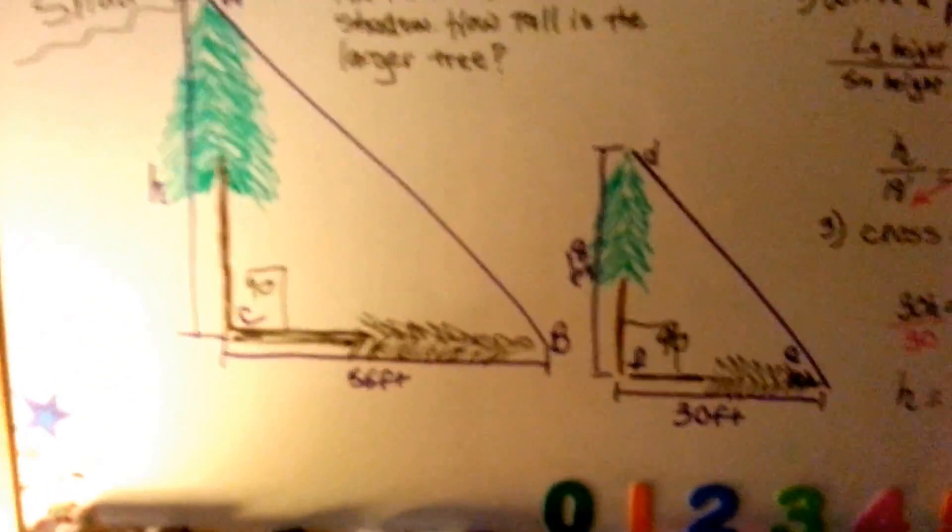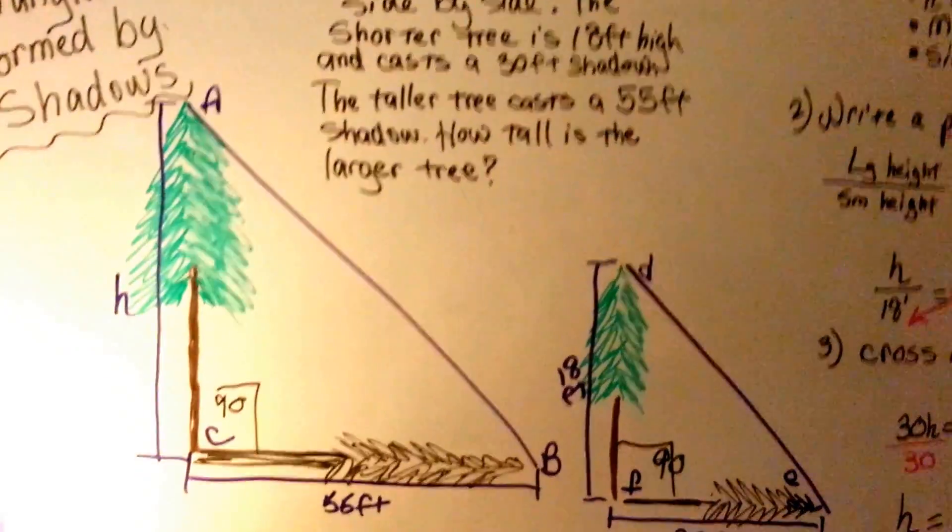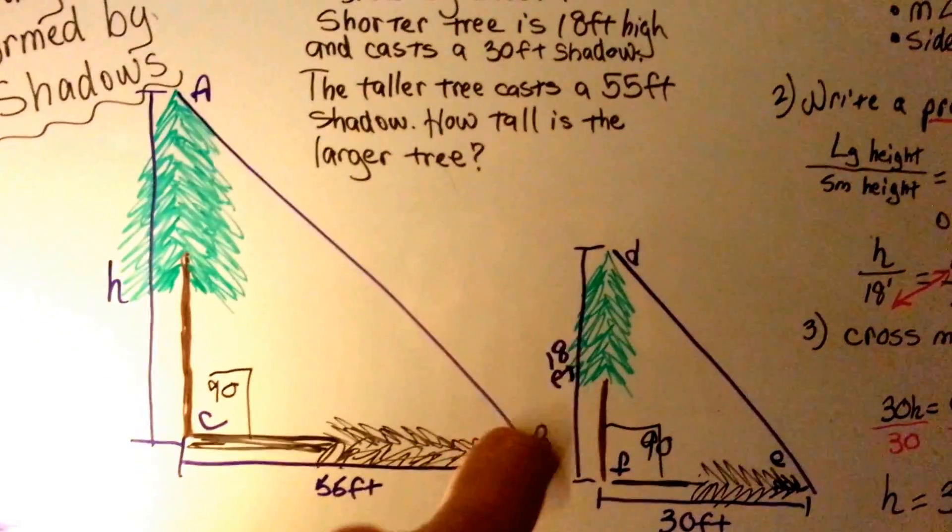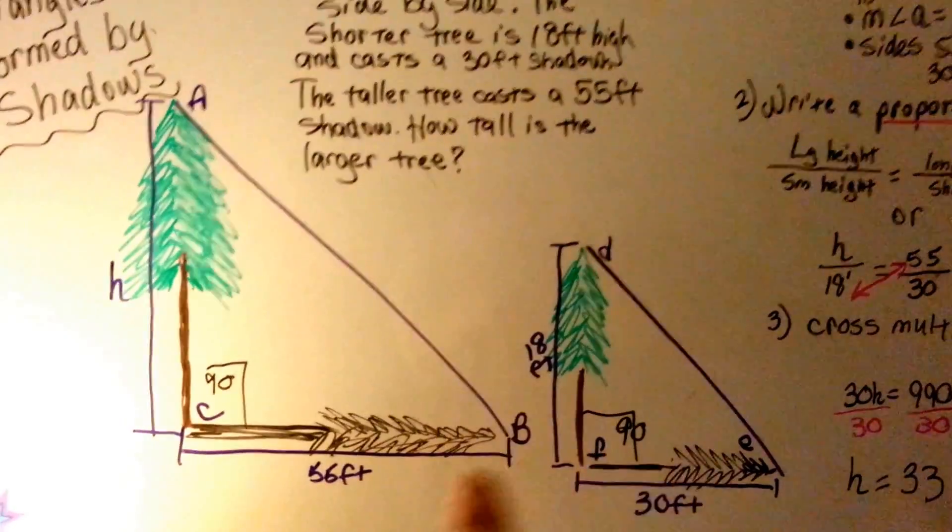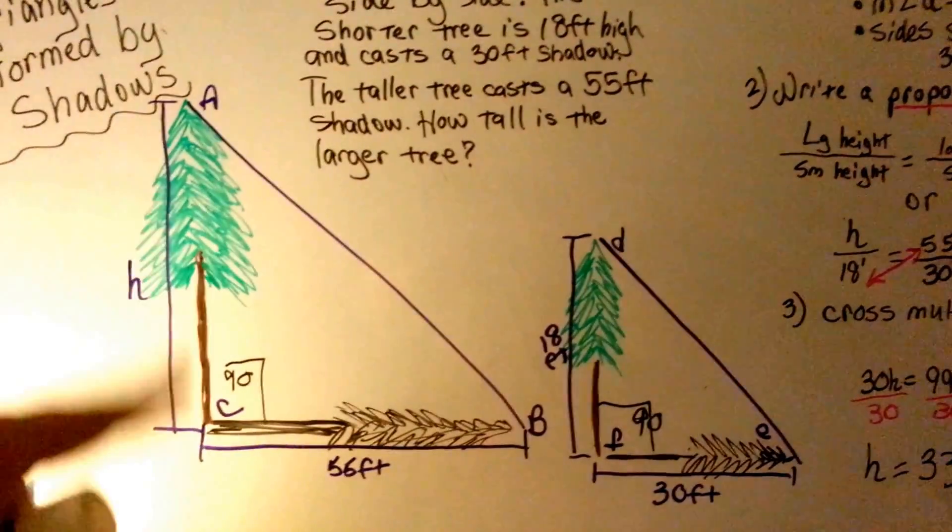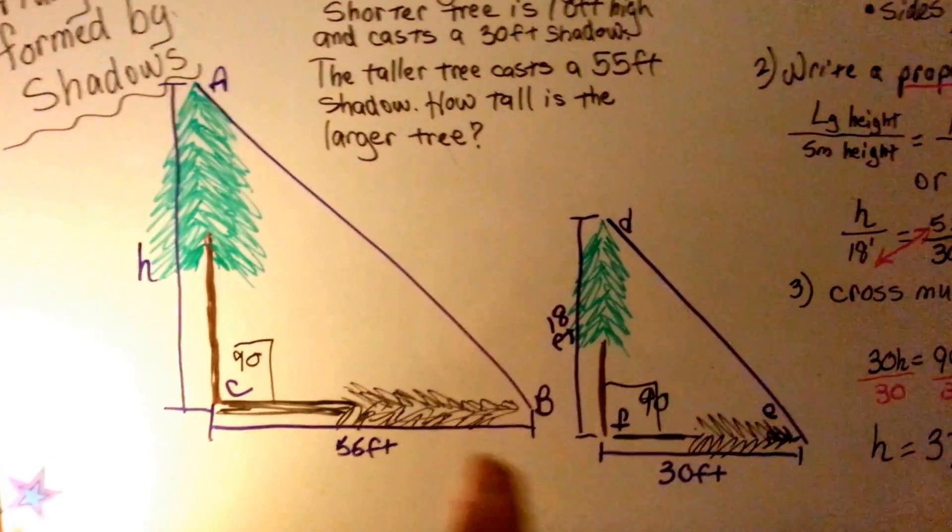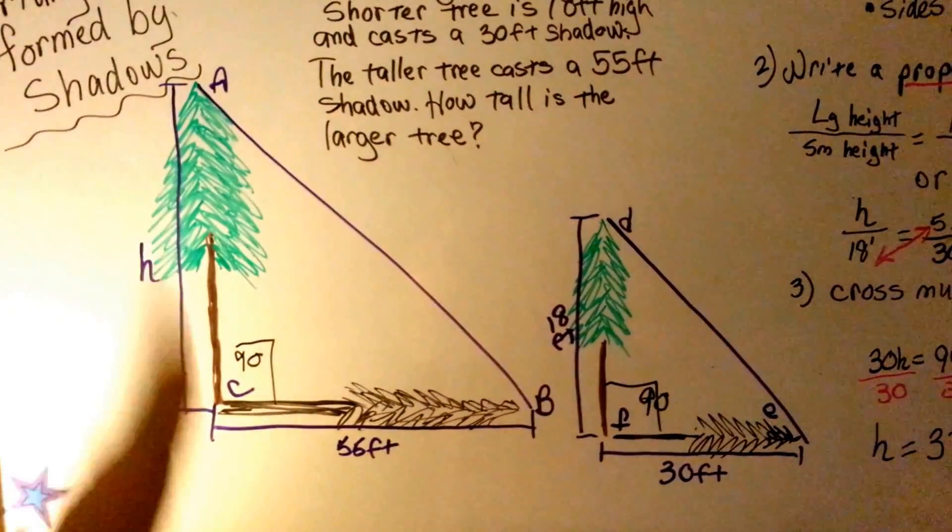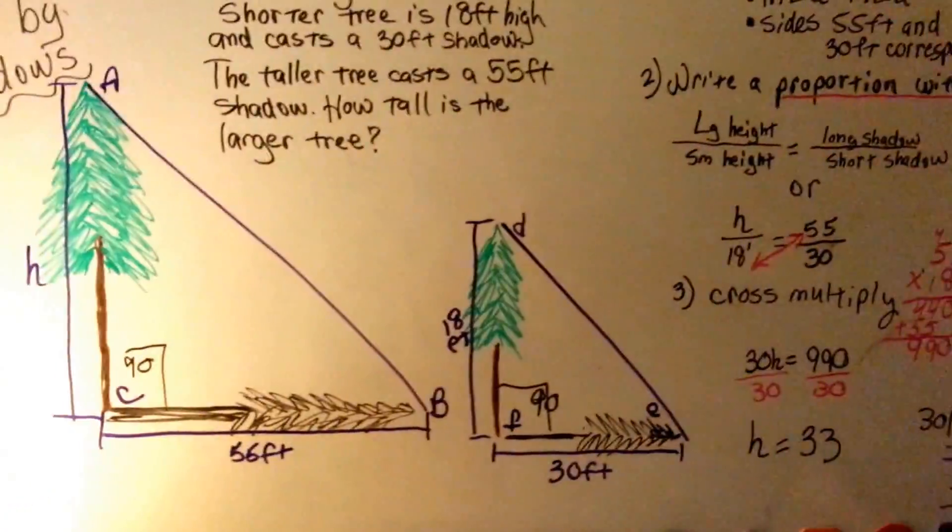So here's how we're going to solve this problem. Two trees stand side-by-side. The shorter tree is 18 feet high and casts a 30-foot shadow. The taller tree casts a 55-foot shadow. How tall is the larger tree? So we're going to use the information from this one to find out the height of this one, because we know this one's 18 feet tall with a 30-foot shadow. That's going to be our ratios.